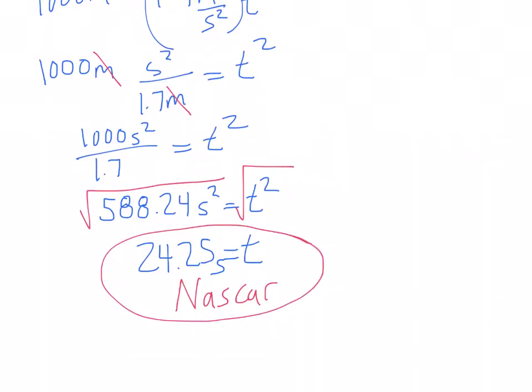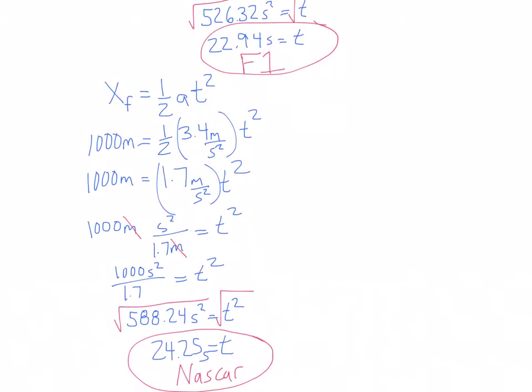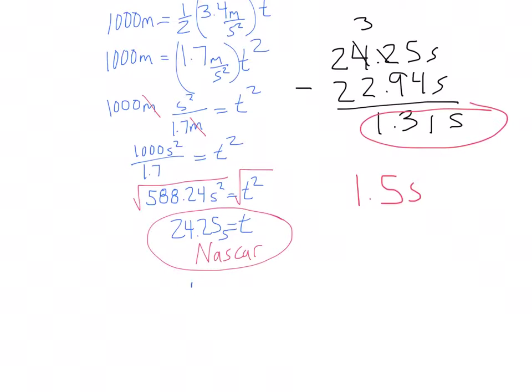So, let's look at the difference in times. The Formula 1 car, of course, was faster, but we want to subtract the two times. 24.25 minus 22.94. So we're left with 1.31. That means that if the NASCAR gets a one and a half second head start, the NASCAR wins. This guy is the winner.